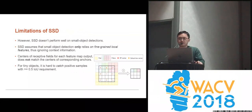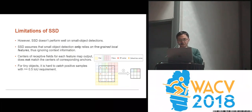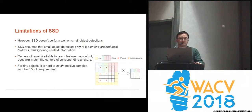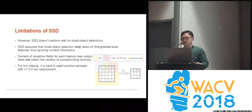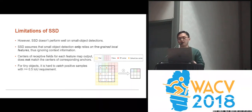However, we found that SSD does not perform very well, especially on small object detection. The most obvious reason for this drawback is that SSD assumes small object detection only relies on the fine-grained local features. Therefore, it ignores all the context information when predicting for the small objects.